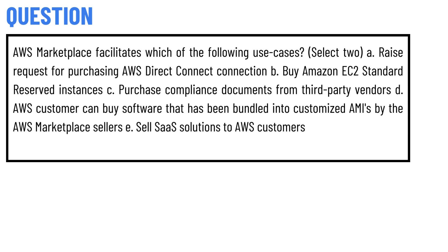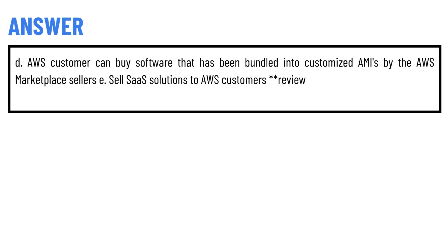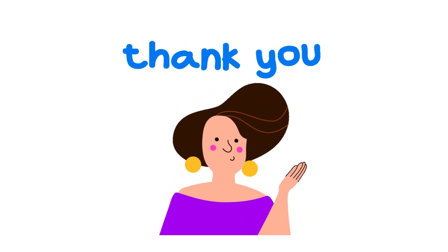Option E: sell SaaS solutions to AWS customers. The correct answers are Option D — AWS customers can buy software that has been modeled into customized AMIs by the AWS Marketplace sellers — and Option E — sell SaaS solutions to AWS customers.